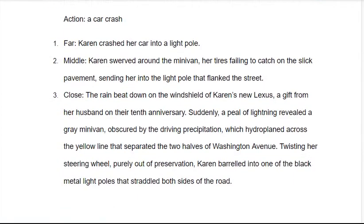Close distance: 'The rain beat down on the windshield of Karen's new Lexus, a gift from her husband on their 10th anniversary. Suddenly a peal of lightning revealed a gray minivan obscured by the driving precipitation, which hydroplaned across the yellow line that separated the two halves of Washington Avenue. Twisting her steering wheel purely out of preservation, Karen barreled into one of the black metal light poles that straddled both sides of the road.' More and more detail — we're getting that idea based on the weather that it wasn't just inattention, but there was an actual emergency. We're starting to get the feeling of what's going through Karen's mind.